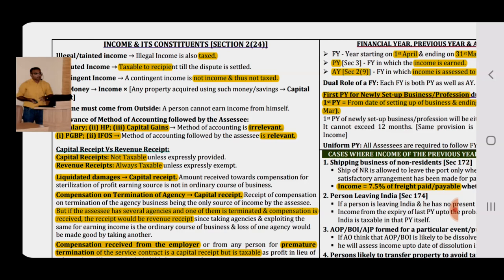The main concept of income is that income must come from outside — you have to earn income externally. For example: salary income, house property, capital gain, income from other sources, PGBP, etc. If there is no external source, it is not taxable. Income must come from outside.